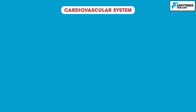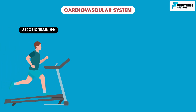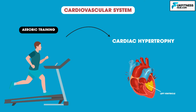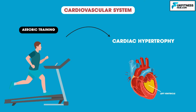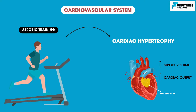Let's start with the long-term adaptations of training on the cardiovascular system. Aerobic training results in cardiac hypertrophy. An increase in size and volume of the left ventricle in particular occurs. This increases stroke volume and cardiac output, allowing a greater volume of blood to be ejected from the heart, thus providing more oxygen for the athlete to use.